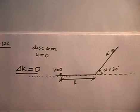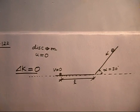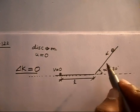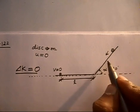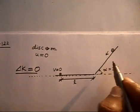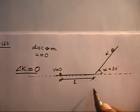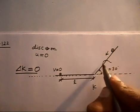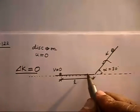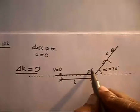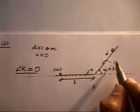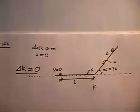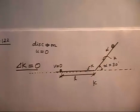The friction coefficient k is the same for both the inclined surface and the horizontal surface. So friction is present on both portions of the path.